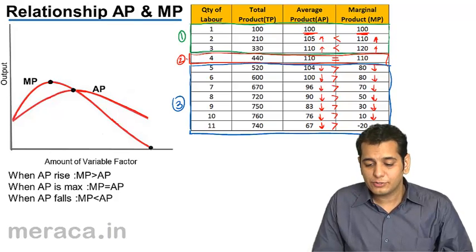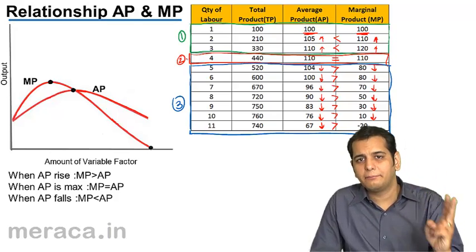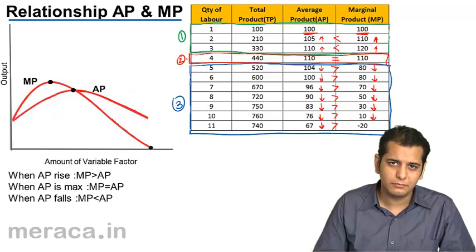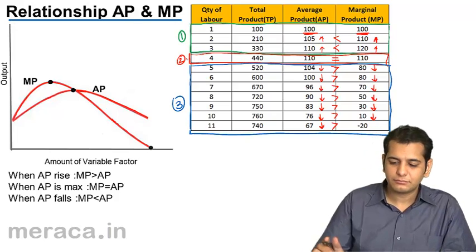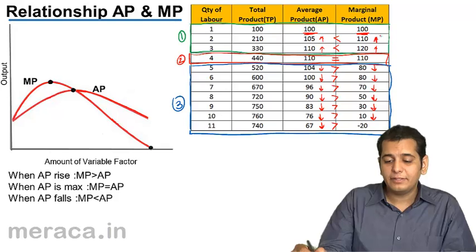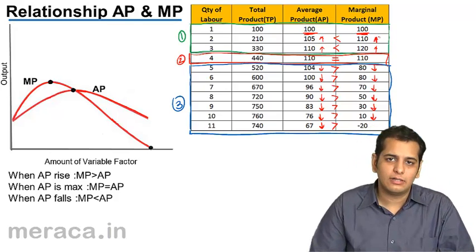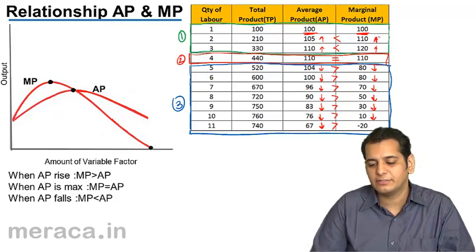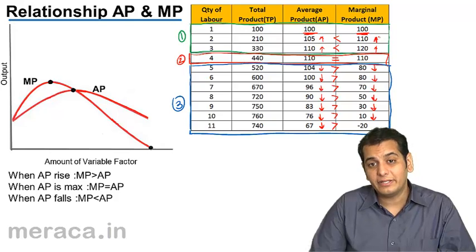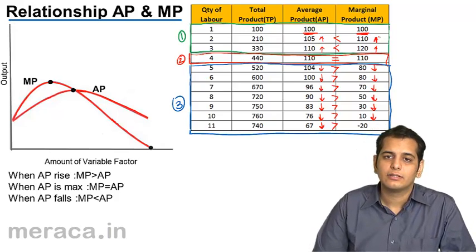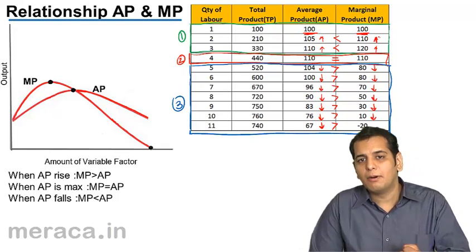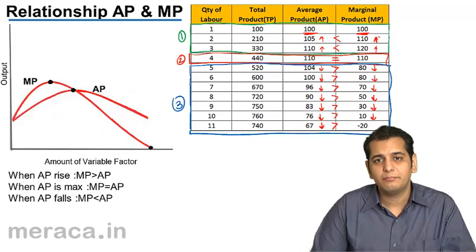In the first part, we can see that both AP and MP start off from the same point. Second, AP and MP both are rising. They both rise. But the thing is, when AP and MP are rising, MP is above AP. MP is greater than AP.